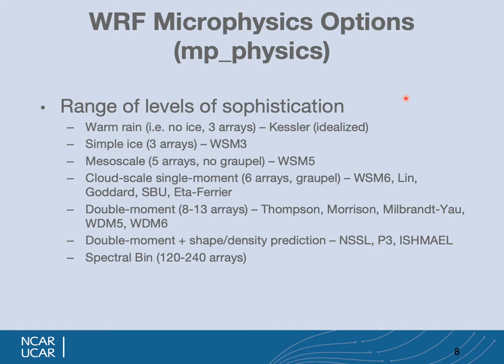To summarize the range of sophistication levels: warm rain schemes like Kessler; simple ice with still only three arrays like WSM-3; mesoscale or low-resolution microphysics without graupel, sufficient for 10 km or larger grid sizes, like WSM-5; then single-moment schemes like WSM-6 which contain graupel. Double-moment schemes contain more arrays including number concentrations, and then there's a further level predicting the shape and density of particles. The highest level is spectral bin options that actually resolve the size distribution.